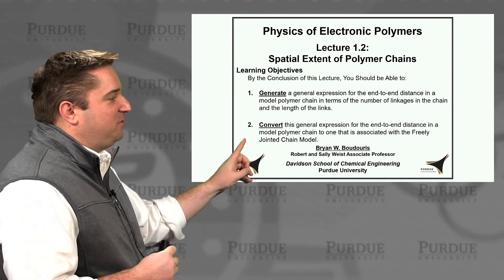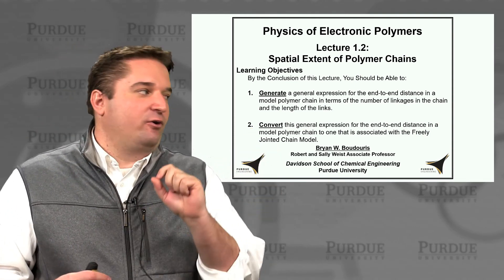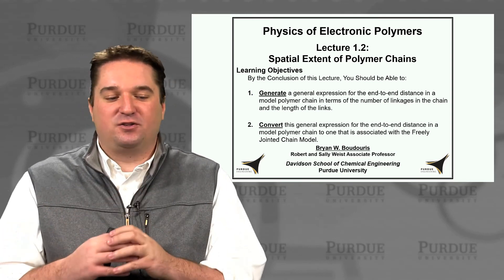The second is once we have this general model we want to convert it to an expression that we'll use for the freely jointed chain model in our system. So we'll be able to do both of these by the end of this lecture.